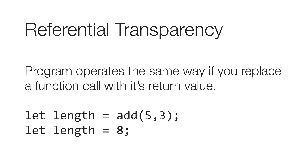Out of those first two constructs — pure functions and immutable data — we get a benefit called referential transparency. It's a side effect of those two things that lets you reason about your program more easily. Simply stated: your program operates the same way if you replace a function call with its return value. The program would operate the same whether you call add with five and three, or just move forward with length set to eight.